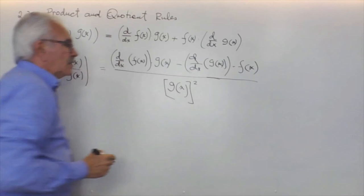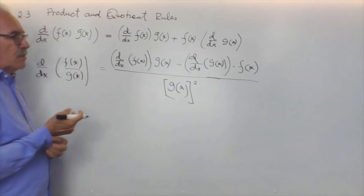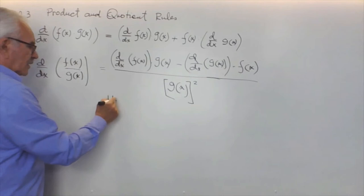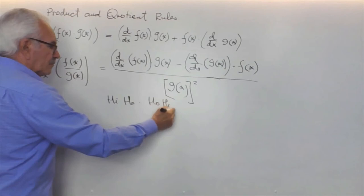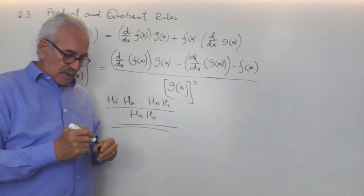To remember the quotient rule formula, we use a mnemonic method based on the words 'hi' and 'ho,' where 'hi' represents the numerator function and 'ho' represents the denominator. The formula reads: ho·d(hi) minus hi·d(ho), all over ho squared.